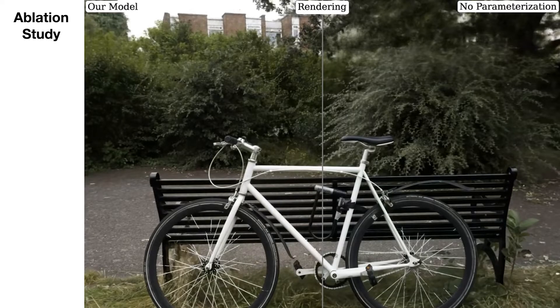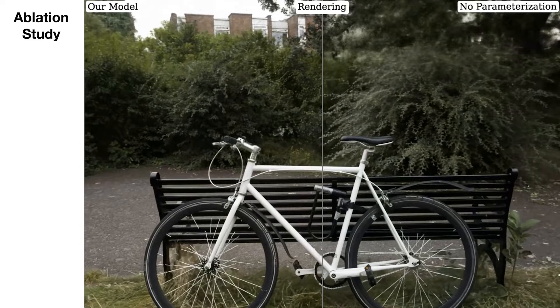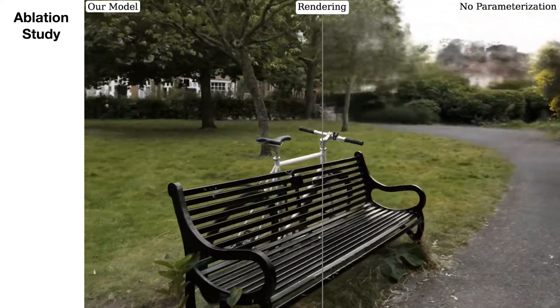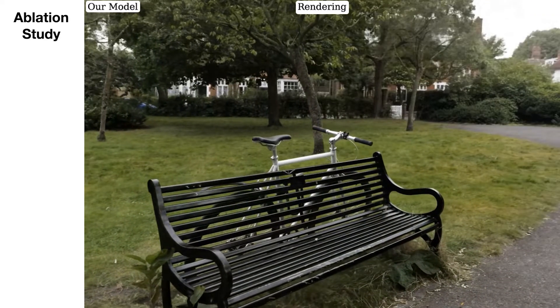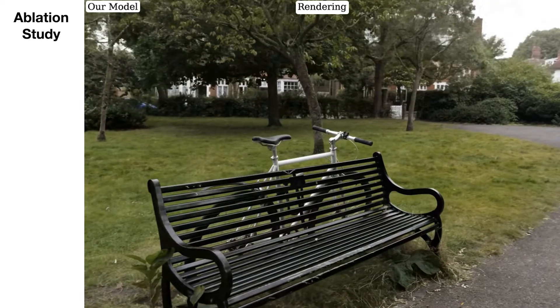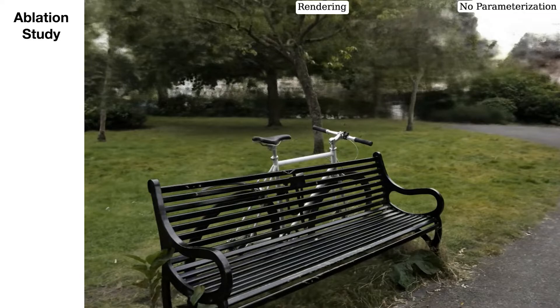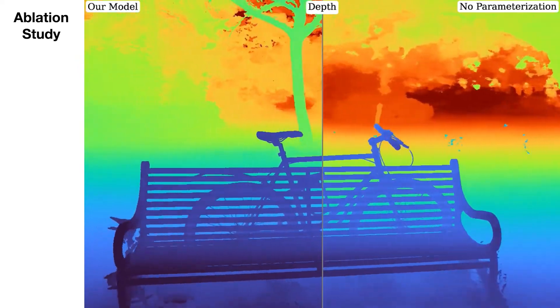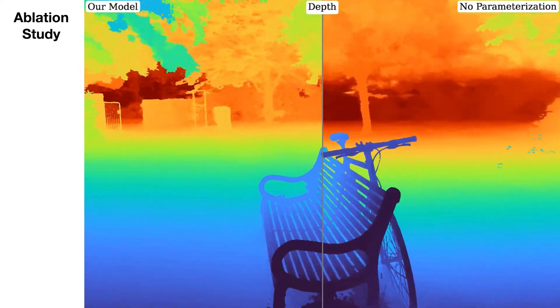Here we're ablating those three model components one by one with the ablation shown on the right. Ablating the parameterization we use results in very blurry backgrounds. Not only are the renderings blurry but you can see from the depth maps that distant areas don't have a lot of detail.